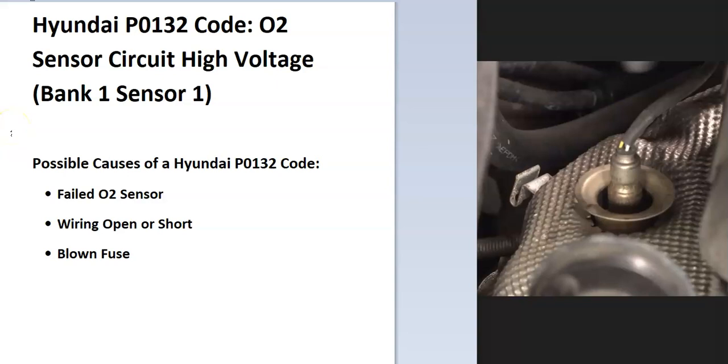Today I'm talking about a Hyundai with the P0132 code, what it is and how you go about fixing it. So what is a P0132 code? It's an O2 sensor circuit high voltage bank one sensor one.